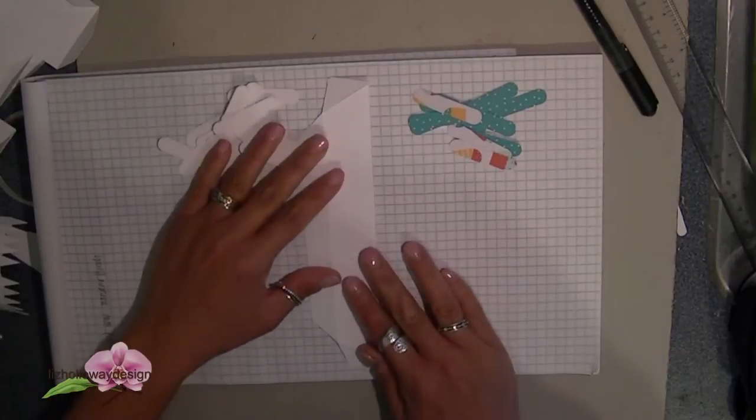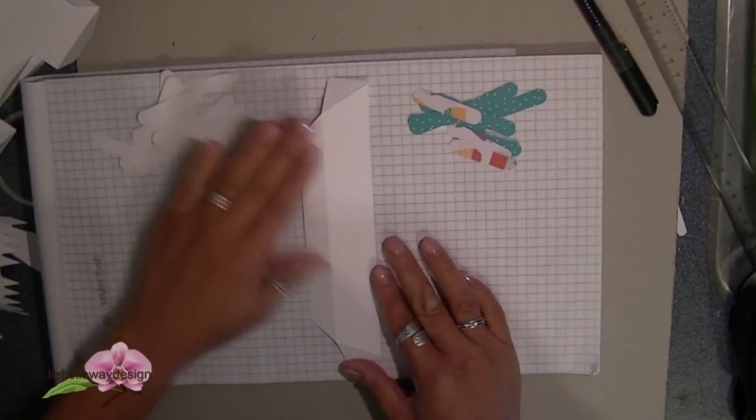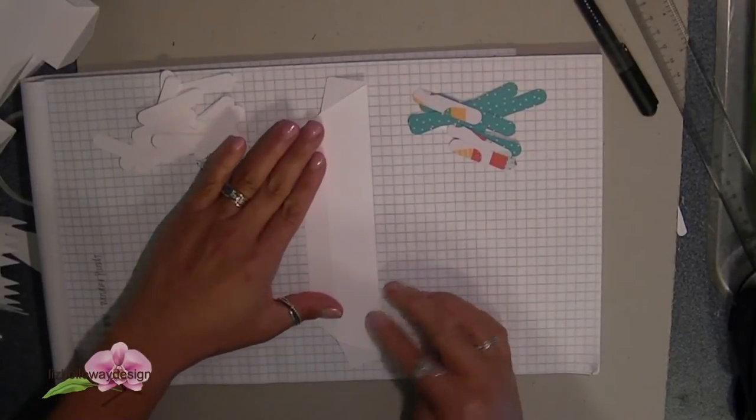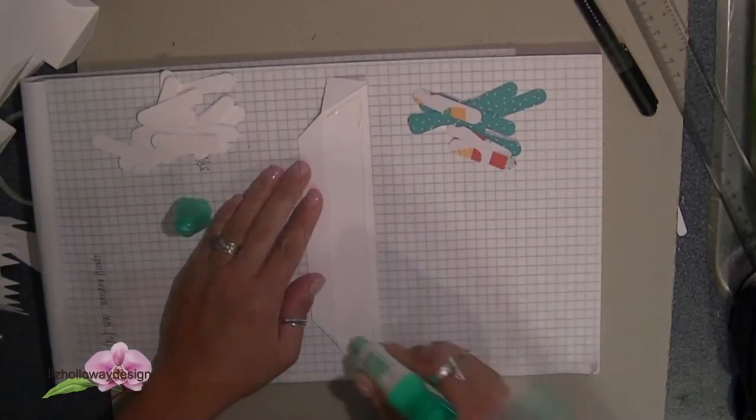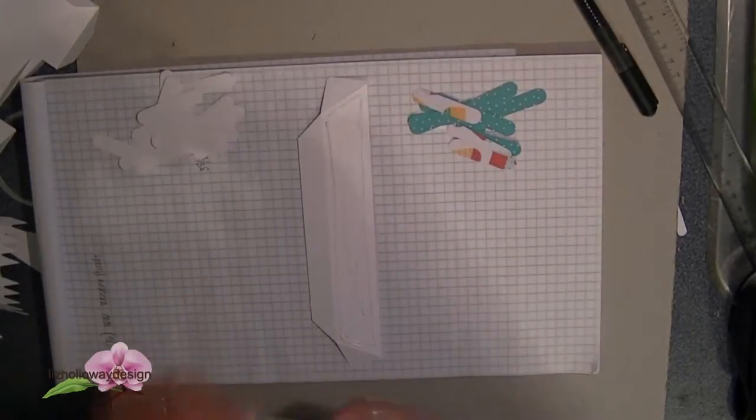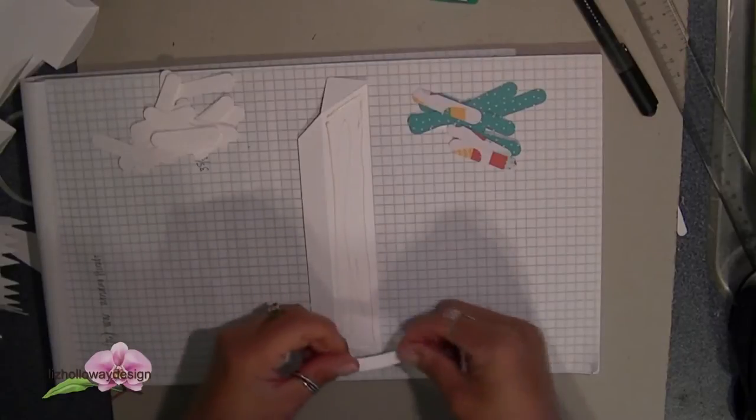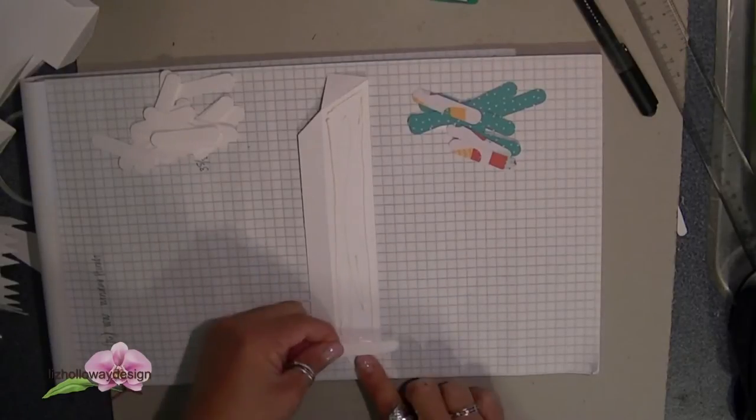First what we're going to do is we're going to work on the awning and I have already creased all the fold lines. As you can see I align the bottom to the grid paper so that when I place the word window pieces I know that I've got this straight.